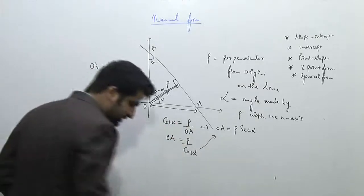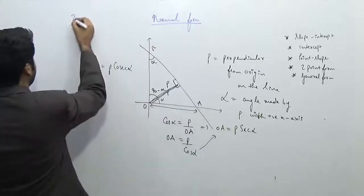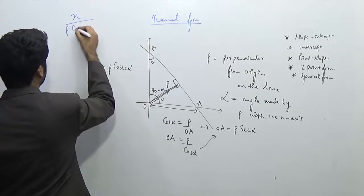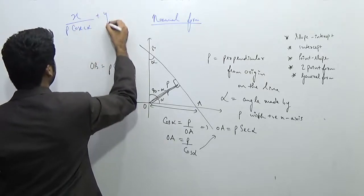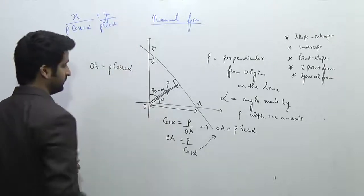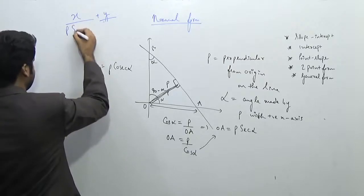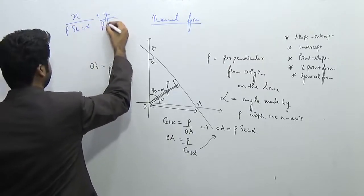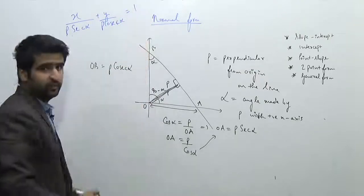Therefore, the equation of the line in intercept form is given by x / (p·sec α) + y / (p·cosec α) = 1. So the x-intercept is p·sec α and the y-intercept is p·cosec α, and this equals 1.